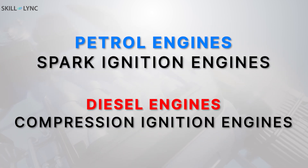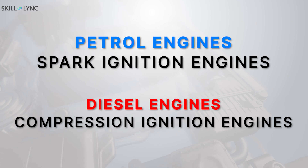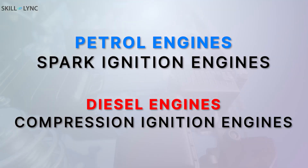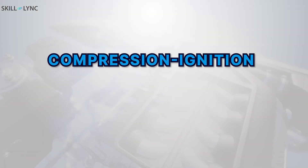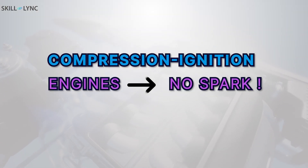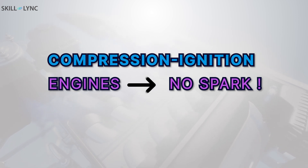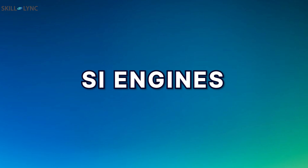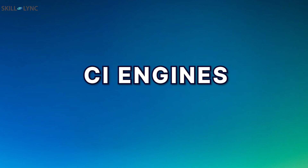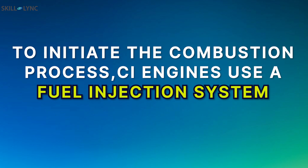Firstly, we all know that petrol engines are spark ignition engines and diesel engines are compression ignition engines. Just as the name suggests, spark ignition engines require a spark for the combustion of the air fuel mixture. On the other hand, compression ignition engines do not need a spark. Since a spark is needed for combustion, a spark plug is used in SI engines. On the other hand, there is no need for a spark plug in CI engines. To initiate the combustion process, CI engines use a fuel injection system.